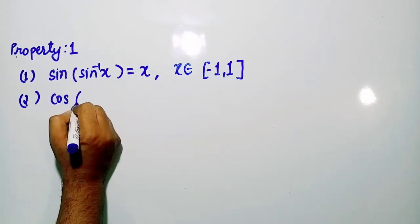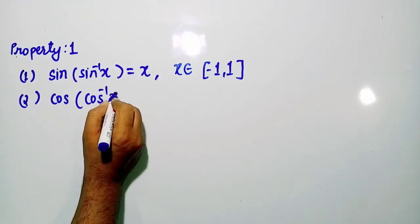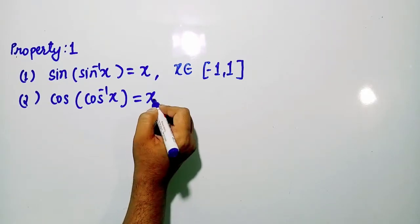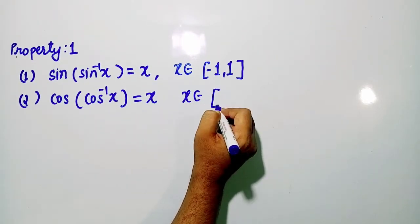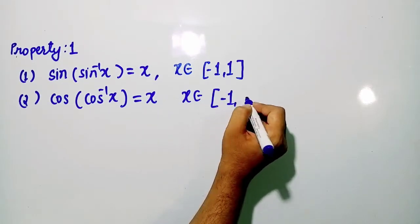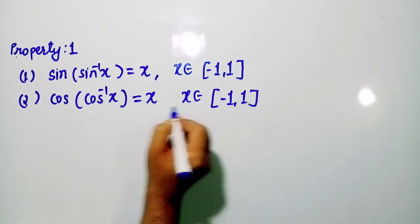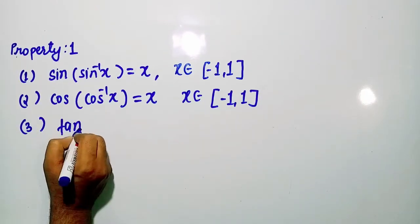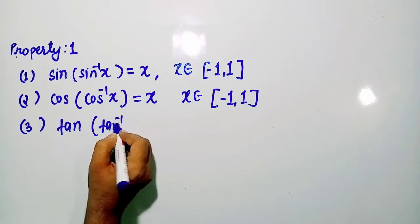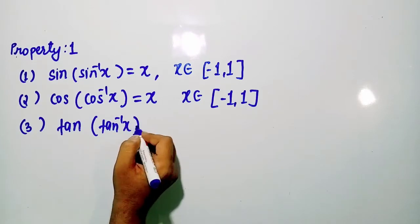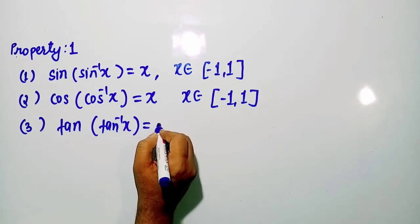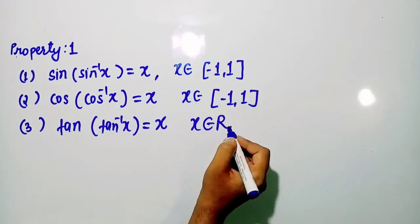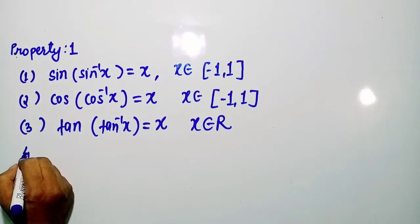Similarly, cos(cos⁻¹ x) = x, where x belongs to the closed interval [−1, 1]. Next, tan(tan⁻¹ x) = x, where x belongs to the set of real numbers.